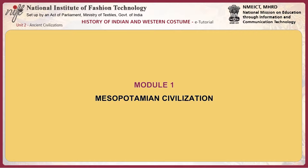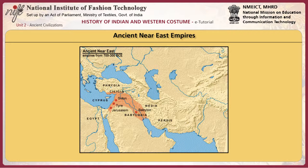The first module focuses on Mesopotamian costume and culture. Mesopotamian civilization existed between 3500 BCE and 300 BCE. The region centered between the Tigris and Euphrates Rivers in modern-day Iraq. The two rivers encouraged commercial contacts which developed into an international trading network.